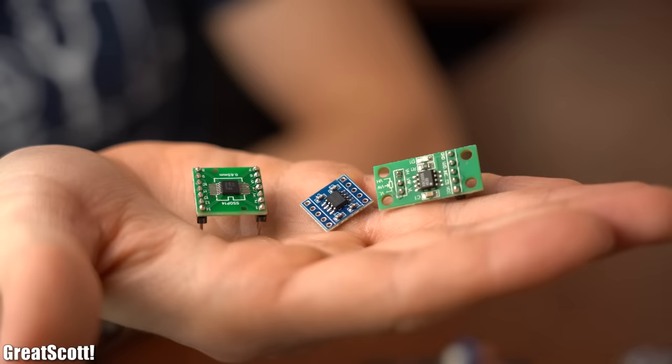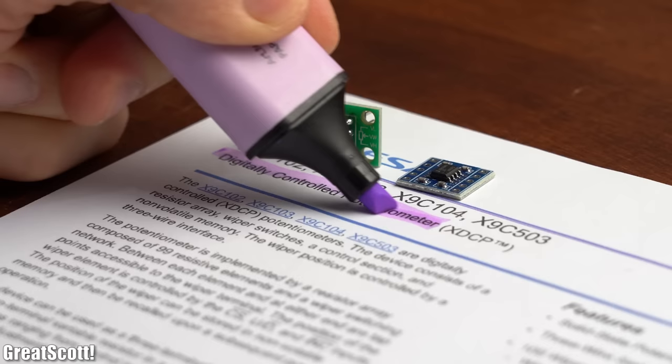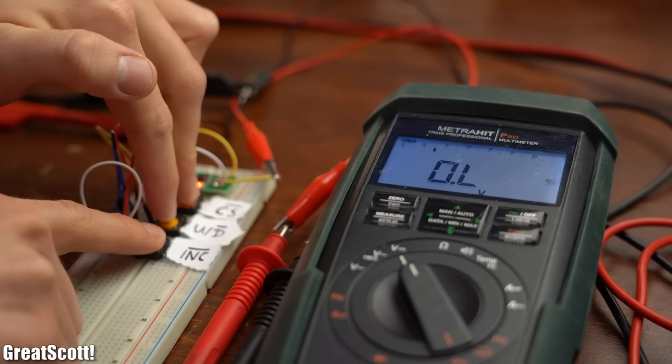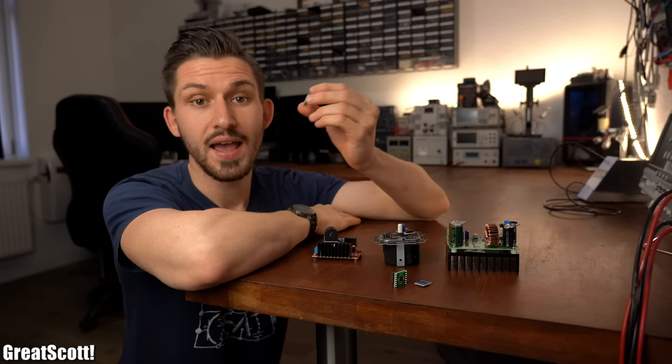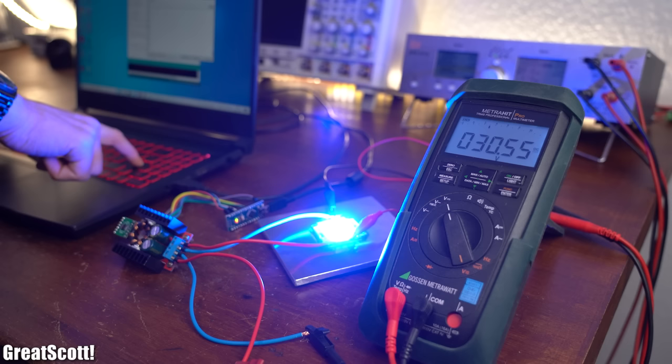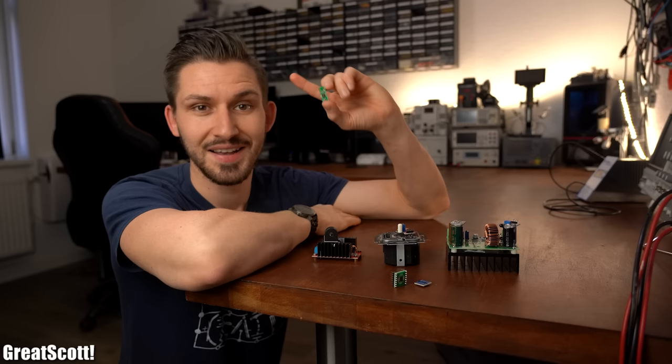The solution are those little ICs right here which are digital potentiometers, and they can be a really handy digitally controlled alternative to mechanical potentiometers. And in this video I will tell you all about them and how you can easily use them to control pretty much any circuit that uses potentiometers. Let's get started!